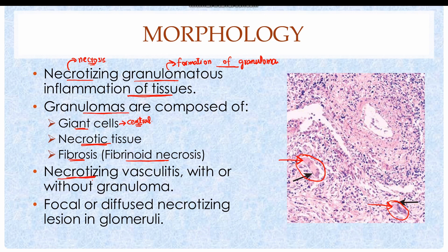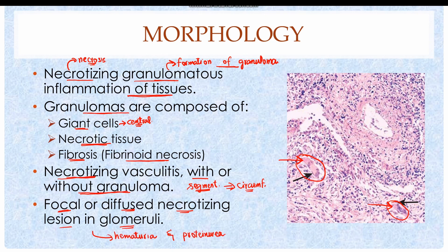The granulomas contain necrotic tissue around the giant cells, and there is also fibrosis in the form of fibrinoid necrosis. The inflammation of the blood vessel is typically necrotizing, which can be with or without the formation of granulomas, and may occur in a segment or circumferentially around the artery. The disease also affects the kidney, resulting in glomerulonephritis with focal or diffuse necrotizing lesions in the glomeruli, causing hematuria and proteinuria. The histological picture is often of crescentic type.